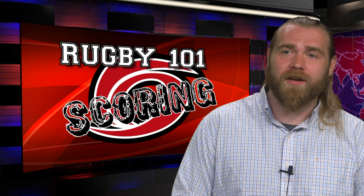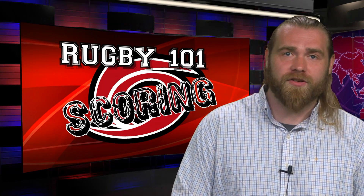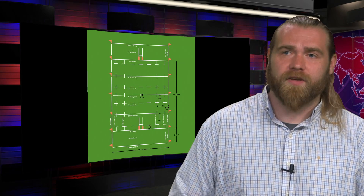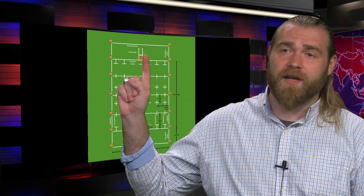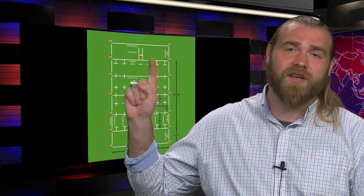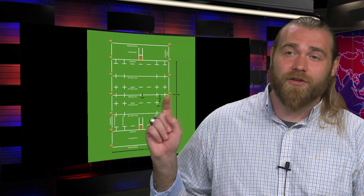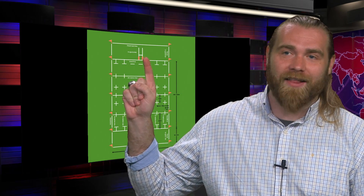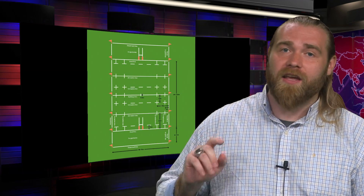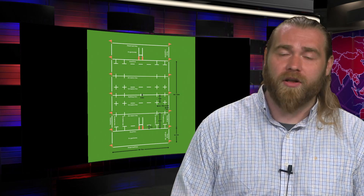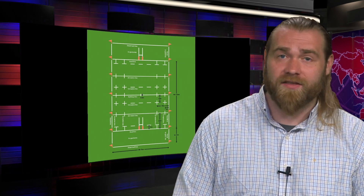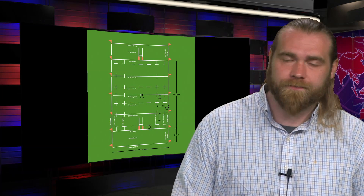Behind me here we'll have an image of a rugby field. Here in these big open spaces behind the goal posts is your try zone. You score a try when you cross the solid line and you place the ball down with force with two hands, under control.